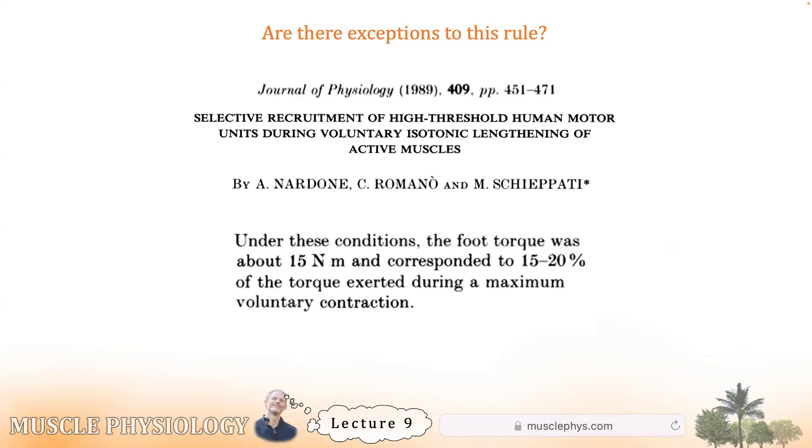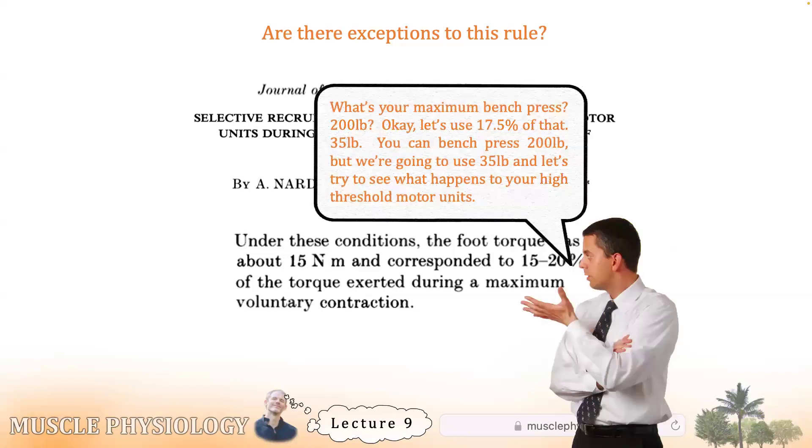Now they used 15 to 20% of maximum voluntary contraction through isotonic concentric plantar flexion and eccentric dorsiflexion, looking predominantly at the soleus and gastroc. Only two subjects had their soleus measured. Surface EMG, all five had their gastroc measured. But think about what this means. Let's say it's 17.5%, 15 to 20%. Let's say it's 17.5% of their maximum voluntary contraction. If this were the bench press and your maximum voluntary contraction were 200 pounds, you wouldn't even be allowed to use the bar. That weighs 45 pounds. You'd need something lighter than that. And so we're using this study to support the premise that athletes can suppress low threshold motor units and instead explode into the high threshold ones. I'm not sure these methods are ideal to answer that question.